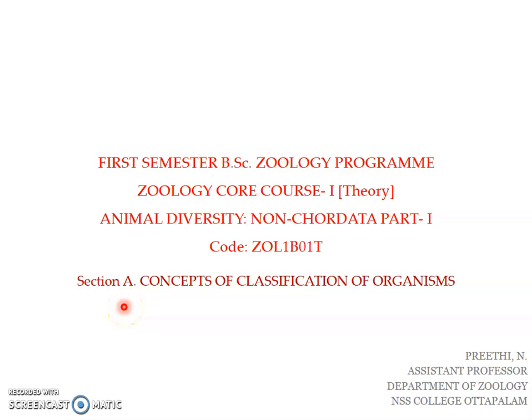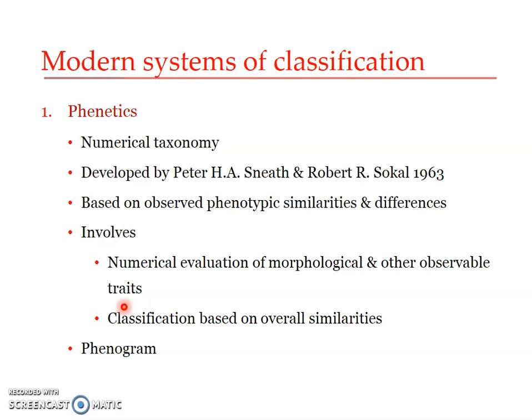Welcome back to another session under the section concepts of classification of organisms. Here we will be dealing with classification. In a previous presentation we already saw the criteria for biological classification, significance of classification, and what features have to be known for classifying organisms scientifically. Now here we will be learning about the modern systems of classification. The present modern concept is that classification should include not only morphological characters but also phylogenetic and evolutionary relations between different groups. Accordingly, there are three systems: phonetics or numerical taxonomy, cladistics or phylogenetic taxonomy, and phyletics or evolutionary taxonomy.